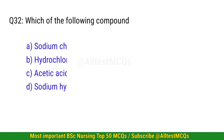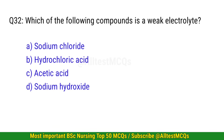Question 32. Which of the following compounds is a weak electrolyte? The correct option is C: Acetic acid.